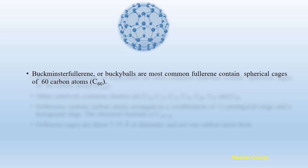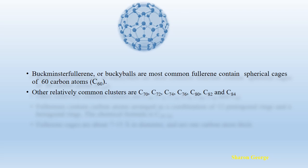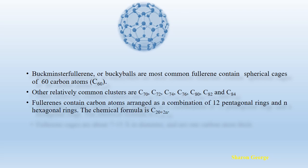Buckminster fullerenes are the most common fullerenes, which contain spherical cages of 60 carbon atoms. These buckyballs are also called C60. Similarly, other common clusters are C70, C72, C74, and so on — depending upon how many carbon atoms are present in the cage. The fullerene contains carbon atoms arranged in a combination of 12 pentagonal rings and N hexagonal rings. So the chemical formula of the fullerene structure can be written as C(20+2N), where N is the number of hexagonal rings present.